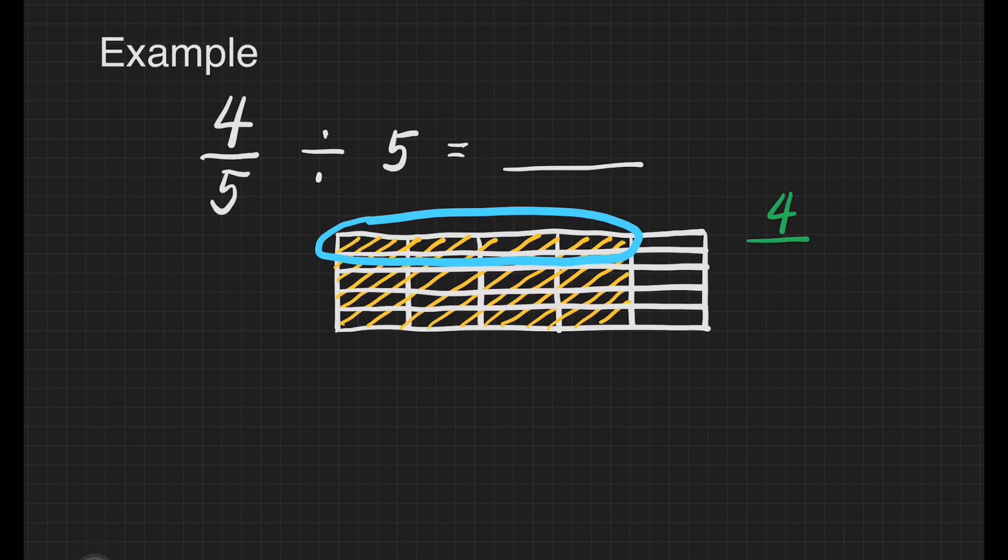What will be our denominator? That will give us 25 since this whole is divided into 25 equal parts now. Our final answer for this question is 4 over 25. And that's it!